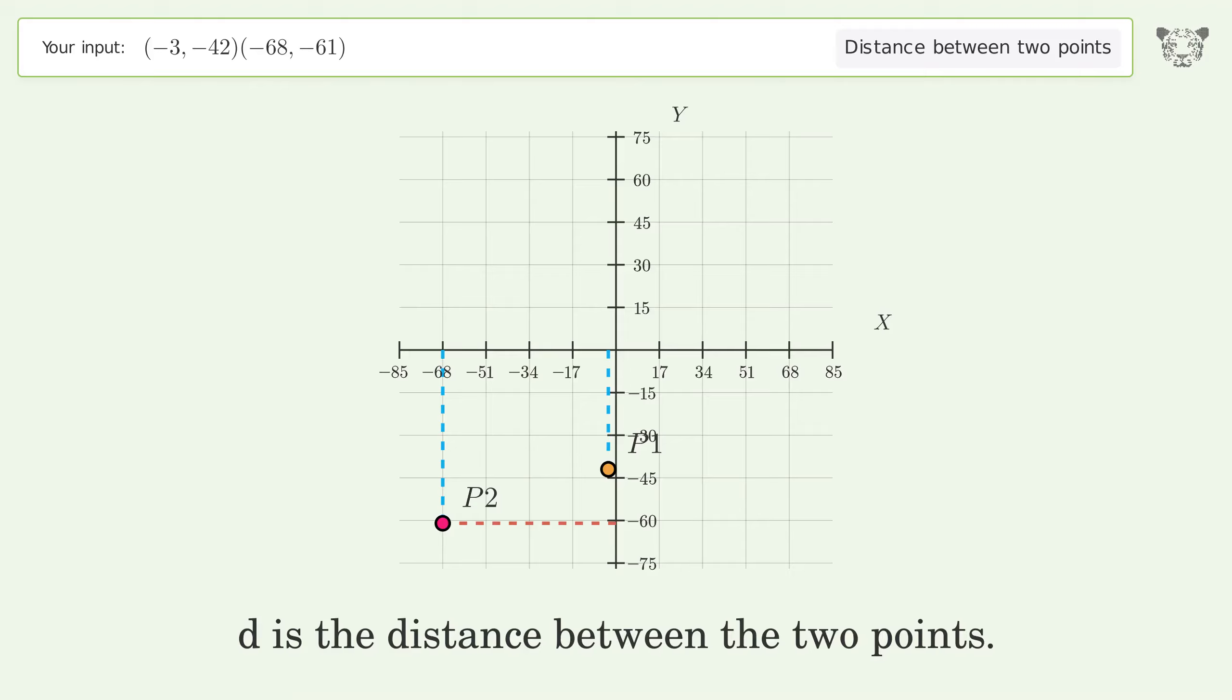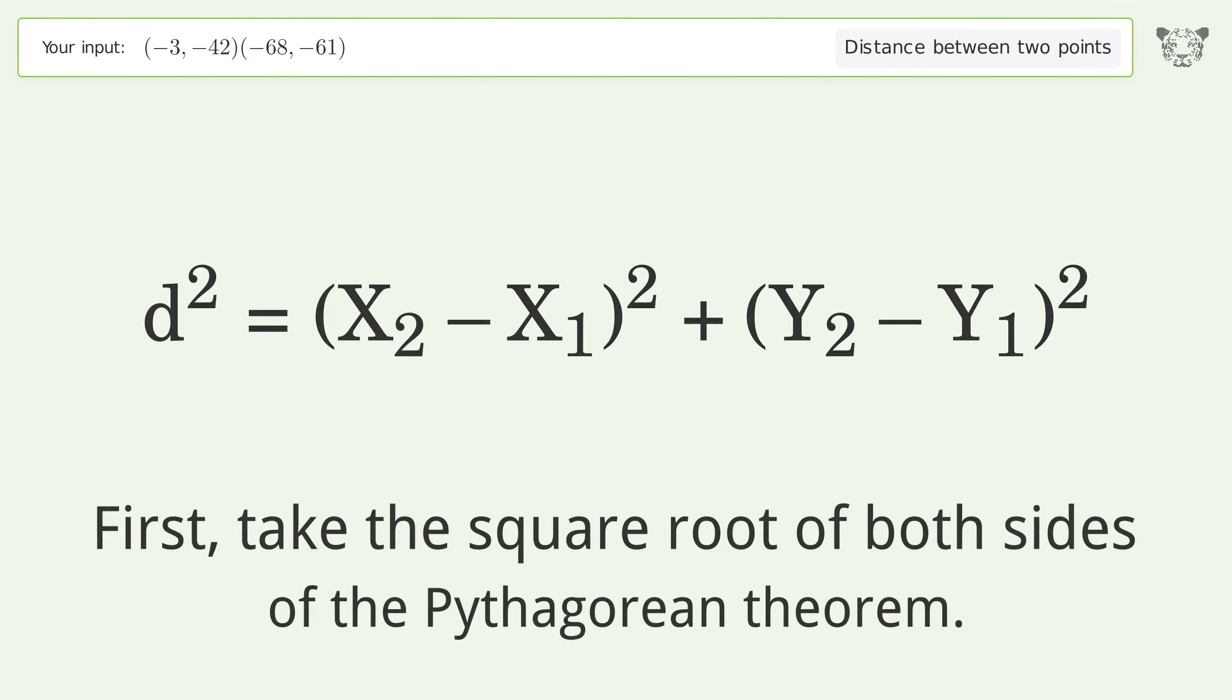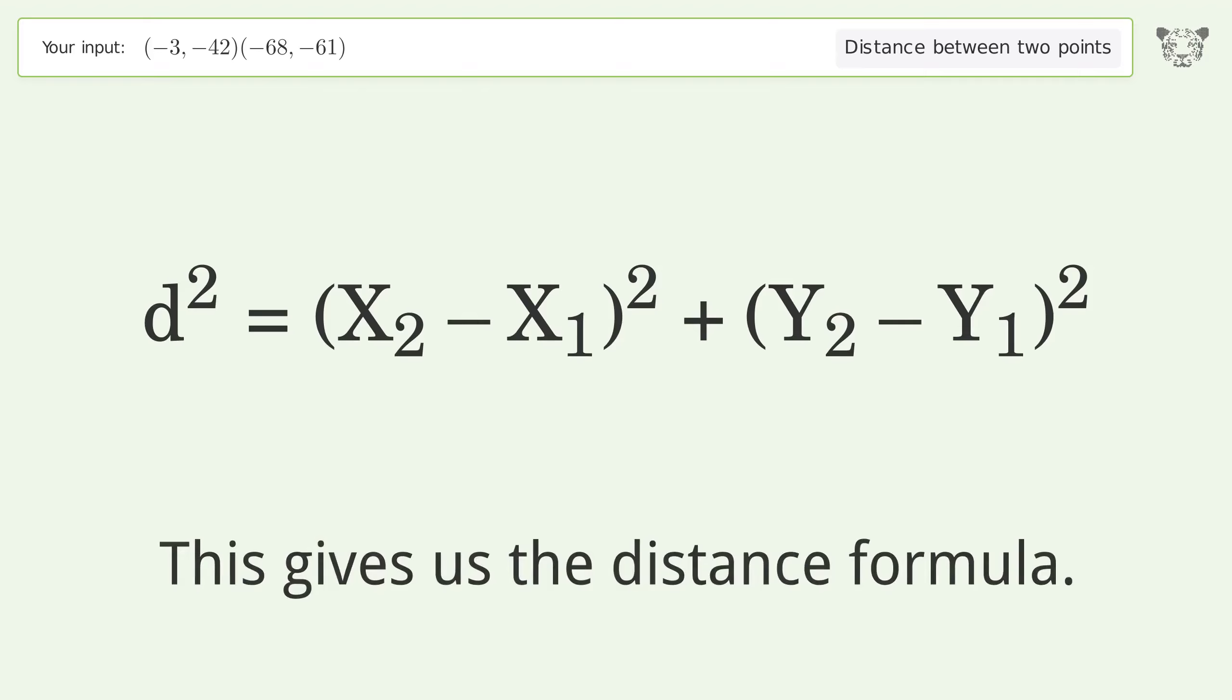d is the distance between the two points. First, take the square root of both sides of the Pythagorean theorem. This gives us the distance formula.